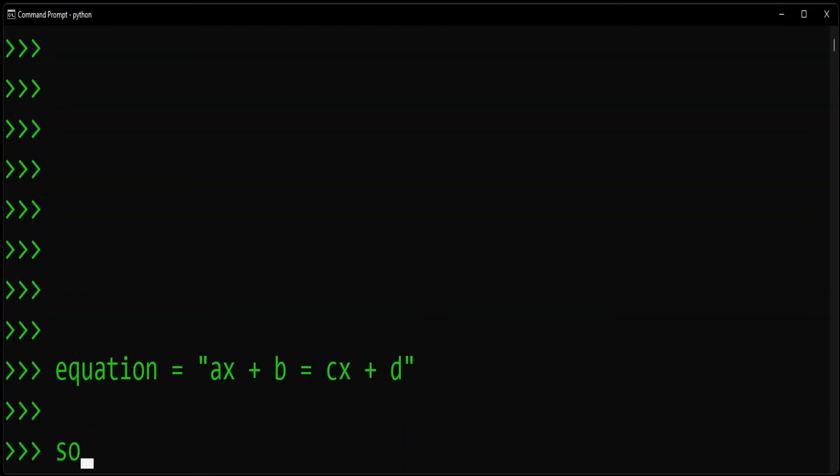Solution. x is equal to, if you solve for x, you'll know that x is equal to d minus b divided by a minus c. And that's the solution for a first degree algebraic equation.